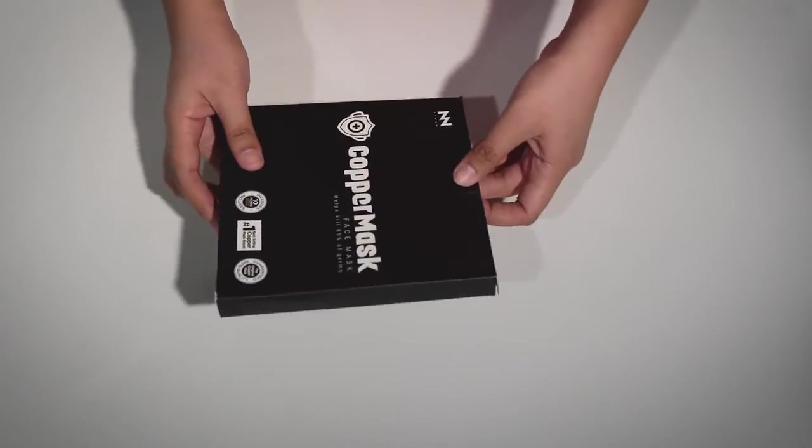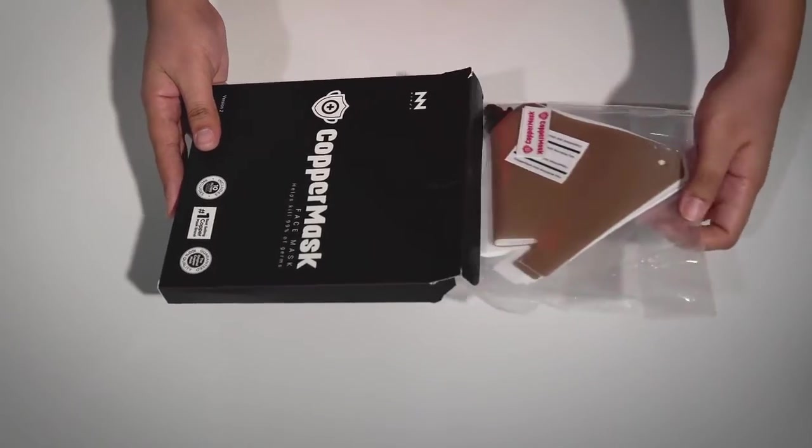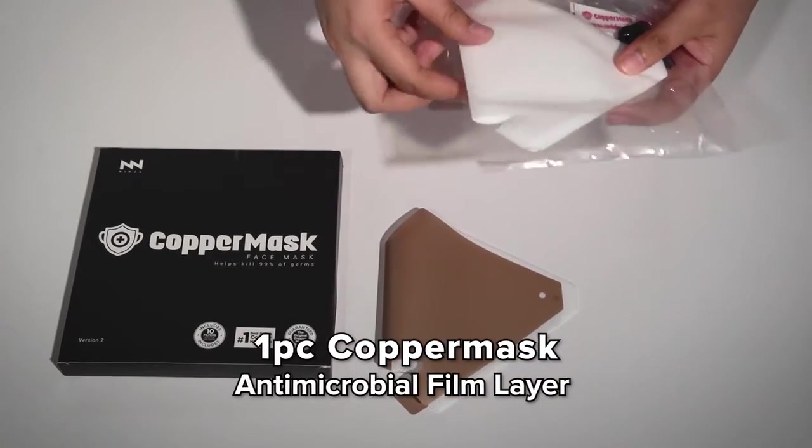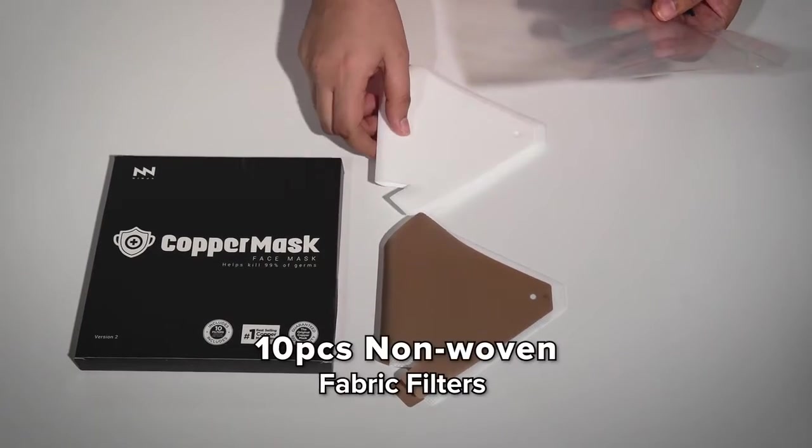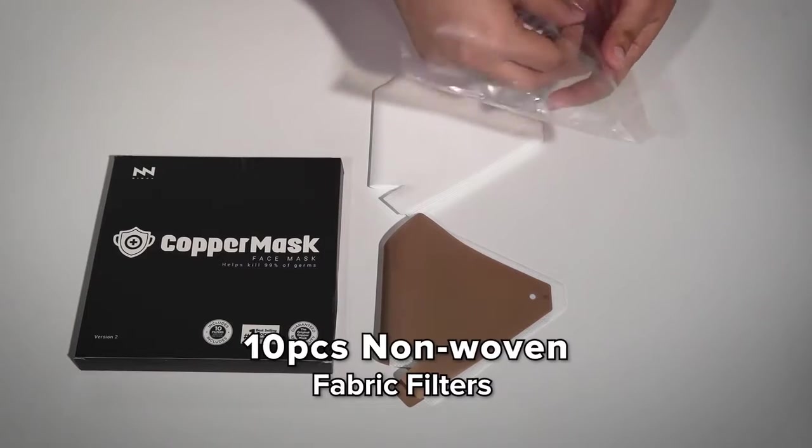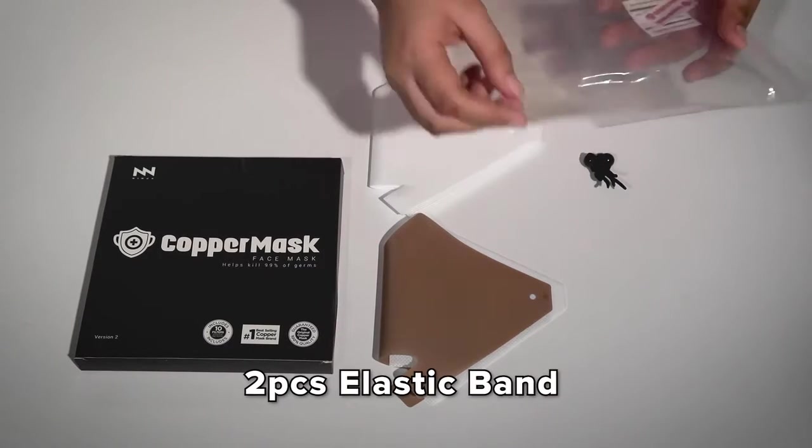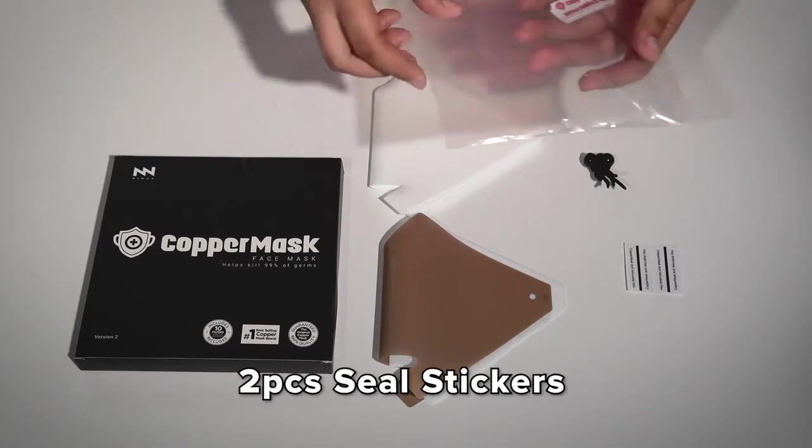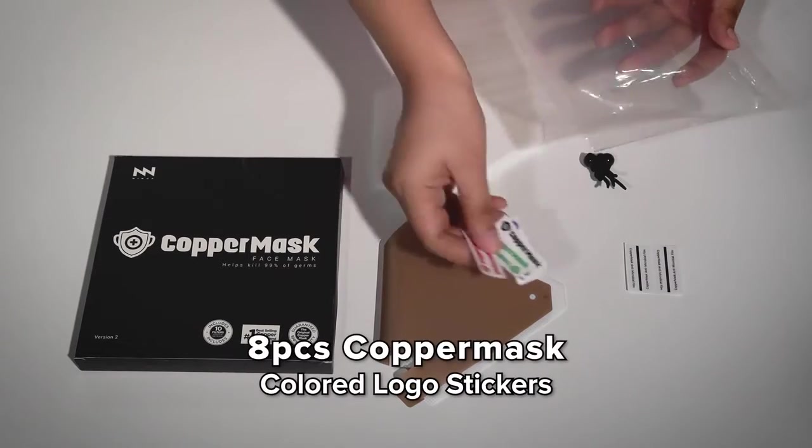Now, let's see what's inside. We have here one piece of the new and improved Copper Mask antimicrobial film layer, 10 pieces non-woven fabric filters, 2 pieces elastic bands, and also our new addition, 2 pieces seal stickers and 8 pieces Copper Mask colored logo stickers.